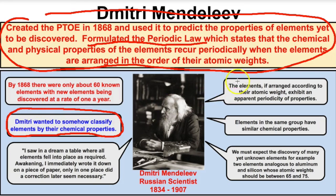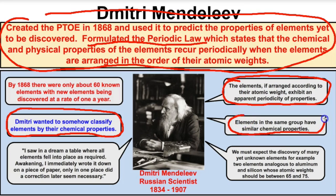He found that if the elements are arranged in order of their atomic weight, they exhibit an apparent periodicity of properties — a repeat of patterns in their physical and chemical properties. In his table, he figured out that elements in the same group have very similar chemical properties.